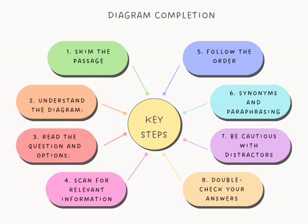The key steps for diagram completion are: first, skim the passage to get an overview and identify key information — look for any references to diagrams, charts, or processes that might be relevant. Second, understand the diagram by carefully examining it — pay attention to the labels, headings, and overall structure. This gives you a better understanding of what information you need to find. Third, read the question and options — the options might provide clues and help you focus your search in the passage.